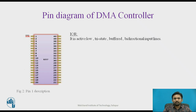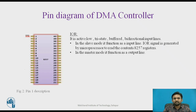About pin number 1, IOR — it is an active low tri-state buffered bidirectional input line. In the slave mode, it functions as an input line. The IOR signal is generated by the microprocessor to read the contents of 8257 registers. In the master mode, it functions as an output line.